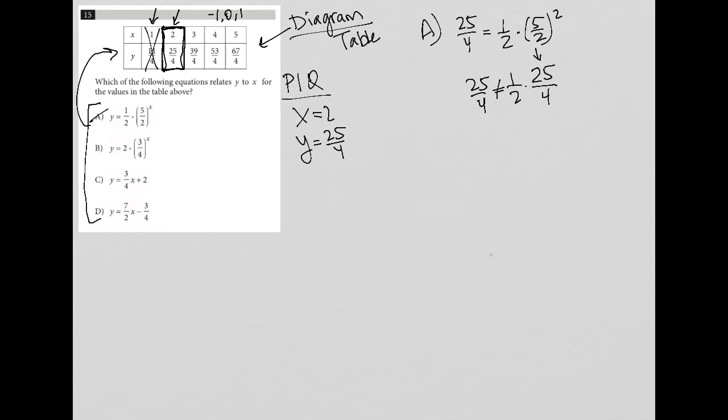When I try choice B, I'm going to do the exact same thing. Instead of y equals, I'm going to say 25 over 4 is equal to 2 times 3 over 4 to the second power. I'm going to simplify that. 3 over 4 to the second power is 3 squared, which is 9 over 4 squared, which is 16. I'm multiplying this by 2. I'm going to call it 2 over 1. That ends up being 18 over 16. Even when I simplify and reduce it by 2, that becomes 9 over 8. 25 over 4 does not equal 9 over 8. So now B is gone.